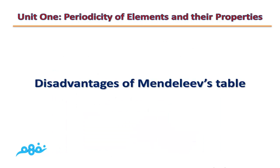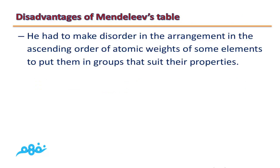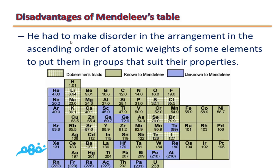Now we will talk about the disadvantages of Mendeleev's Periodic Table. The first disadvantage is that Mendeleev had to make exceptions in the ascending order of atomic weights for some elements. For example, element Ta has atomic weight 181, the next is 184, then 180, then 194. Mendeleev had to place these elements out of strict ascending order to put them in groups that suit their properties.